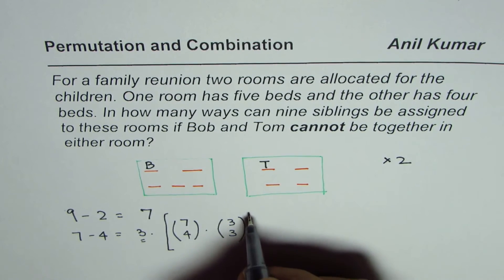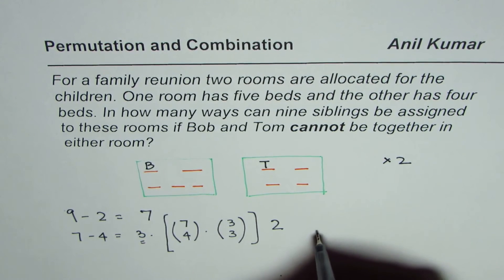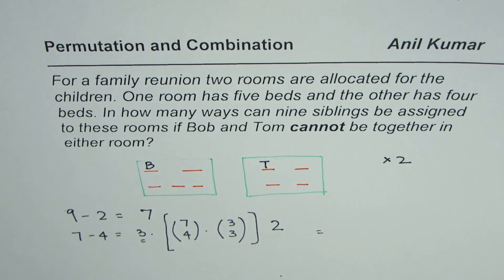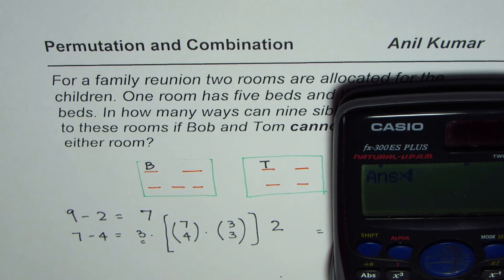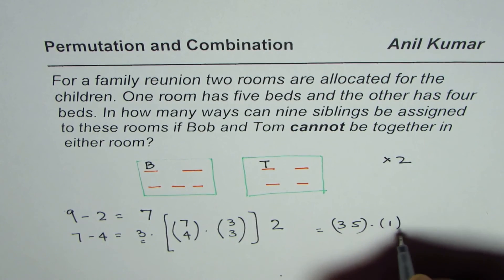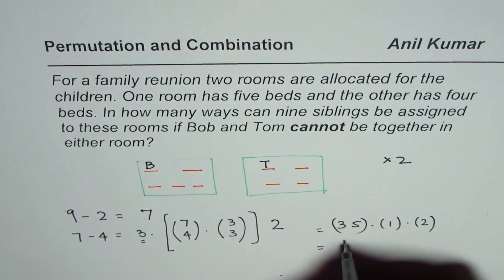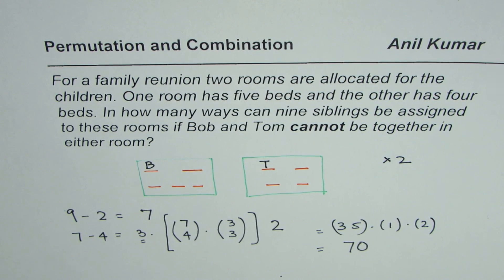Since Bob and Tom could be interchanged, we have two such combinations. So the answer should be 7C4 times 3C3, which equals 35 times 1 times 2, giving us 70. There are 70 ways in which nine children can be arranged in these two rooms.